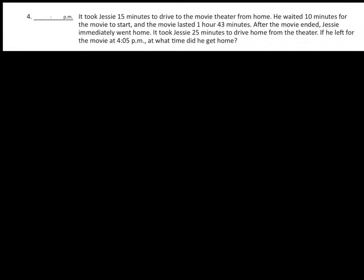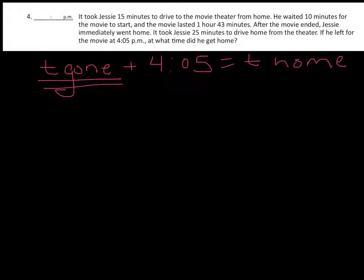For problem number four, the basic question that we're asked is if Jesse left at 4:05 p.m., what time did he get home? If you read the problem carefully, it tells us all the time he was gone. So to calculate this problem we need to add up the time he was gone and add that to the time he left, which equals the time when he got home. So first we need to figure out the time he was gone and to do that we're going to add up all the time.